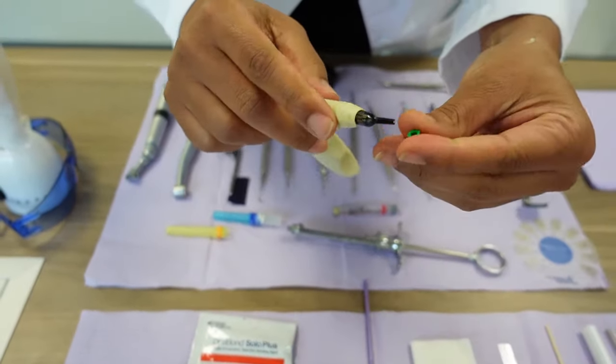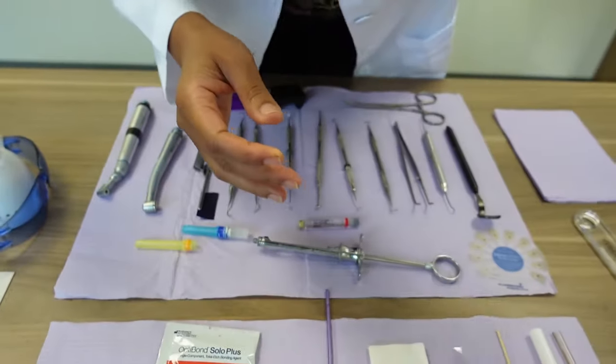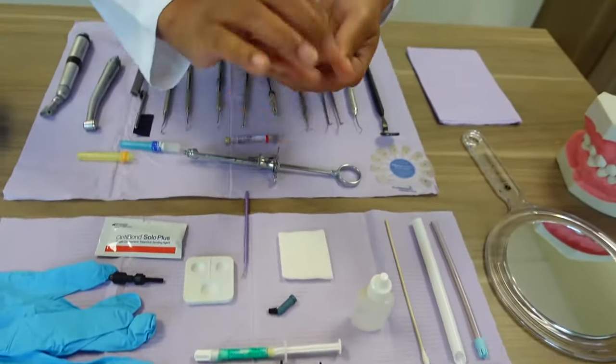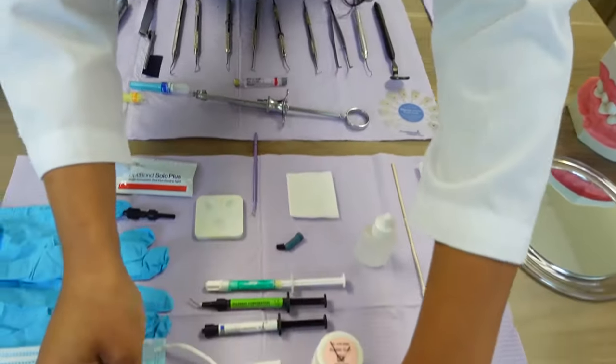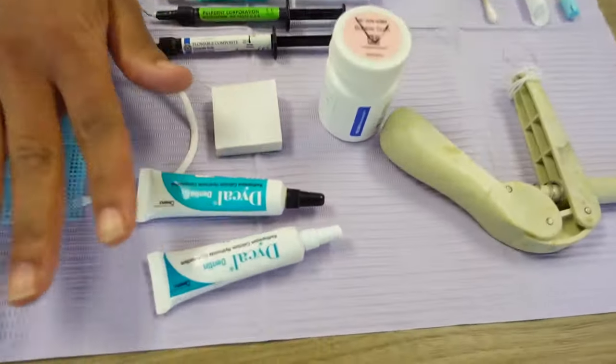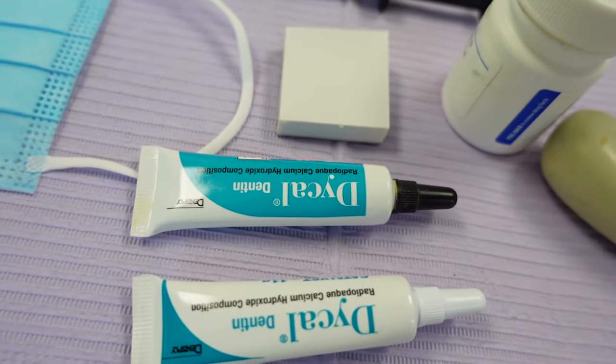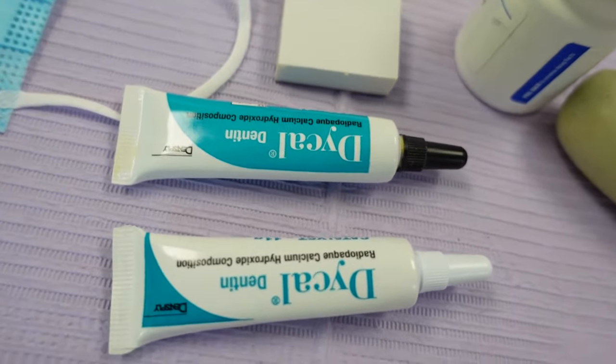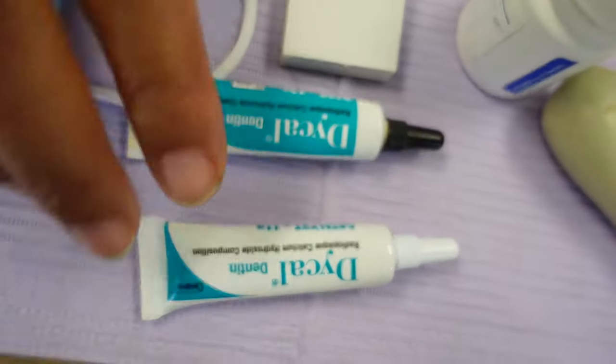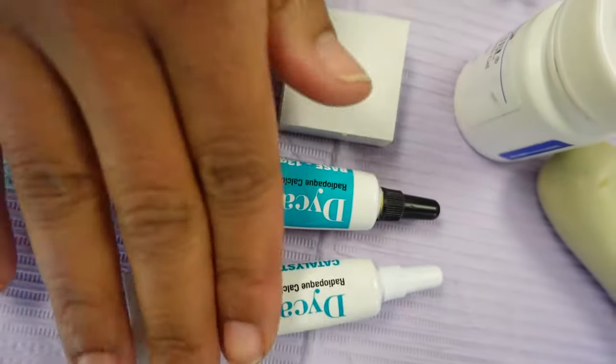This right here is actually called Dical. Dical can also be used as a cavity liner—it's a radiopaque calcium hydroxide composition. You have a base and you have a catalyst, and once you mix those together it will have a uniform color. That is used as a liner.